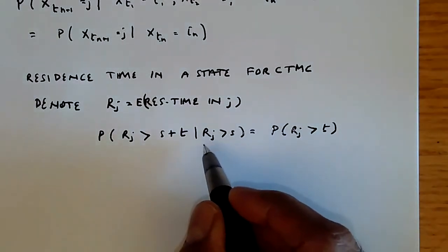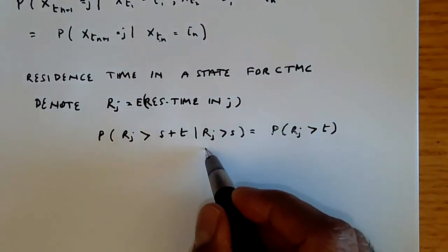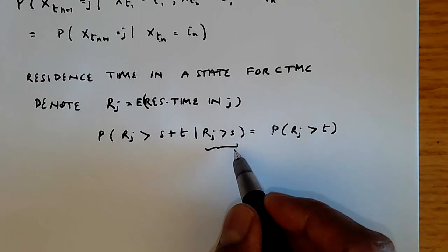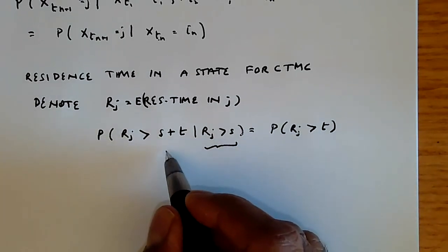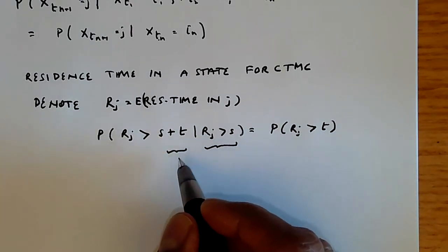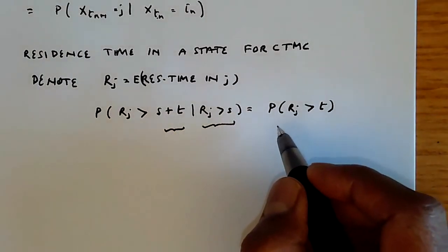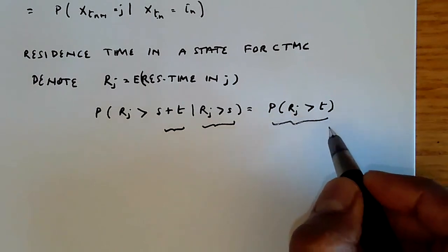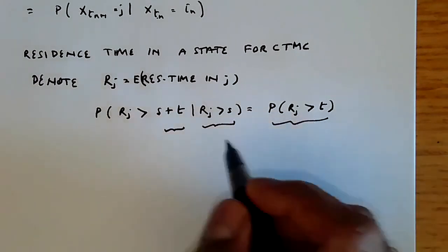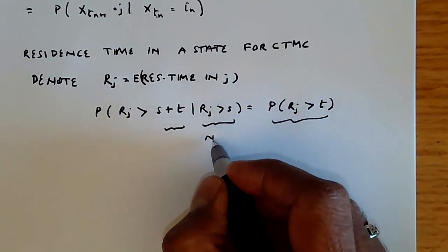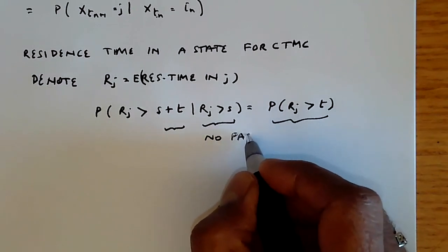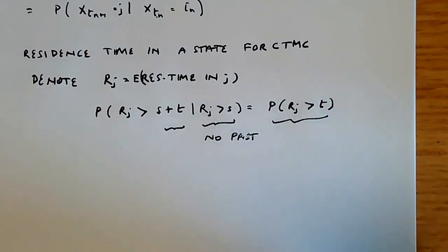What you're saying is that if we've already been in the state for time duration s, the probability that we are in the state for t time units more is essentially the same as being in that state for t time units from the beginning. There is no past history. And this comes from the memorylessness property of the exponential distribution.